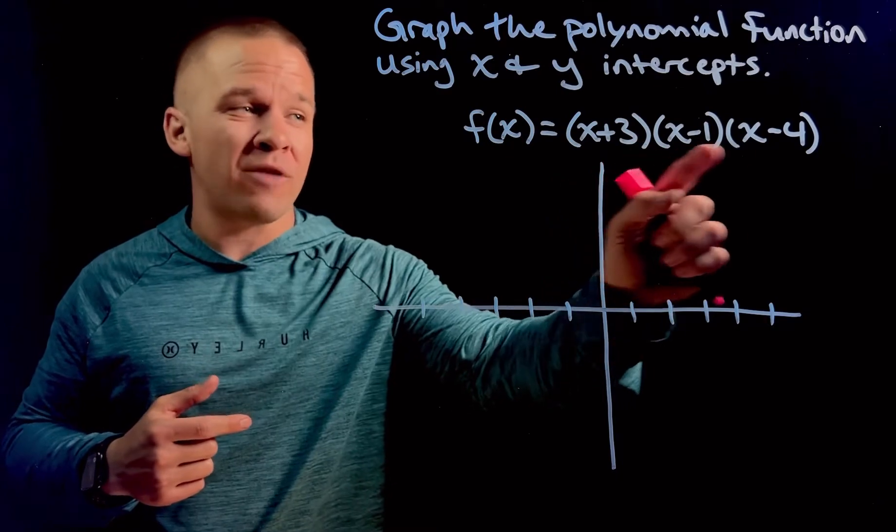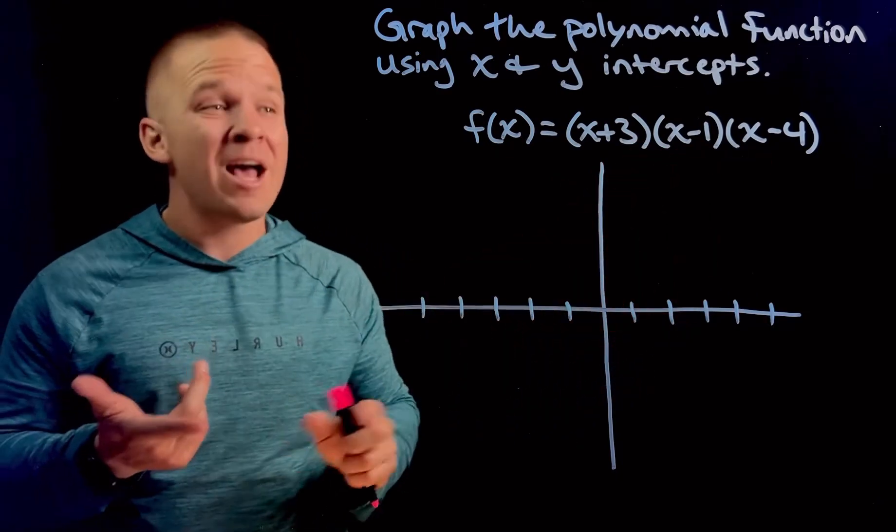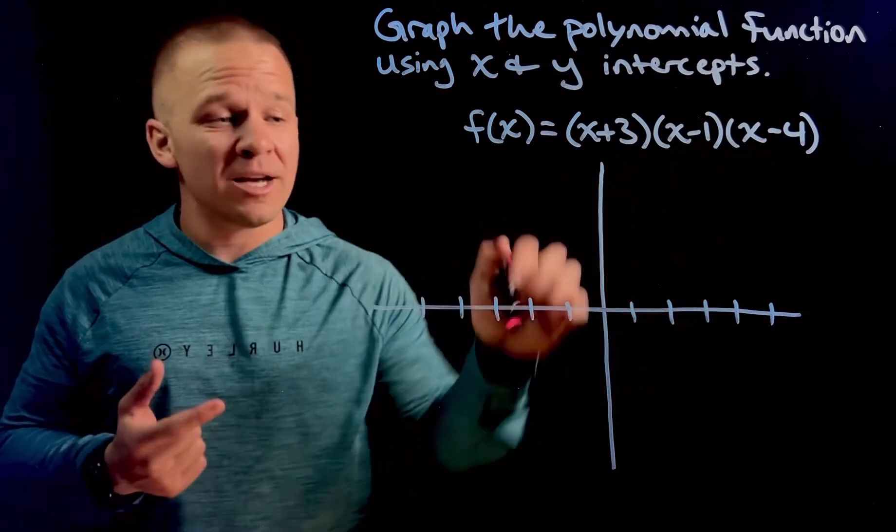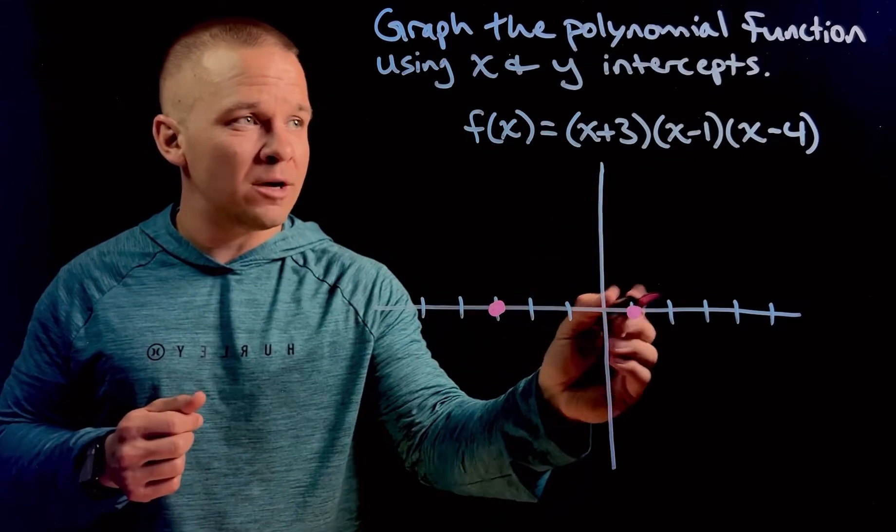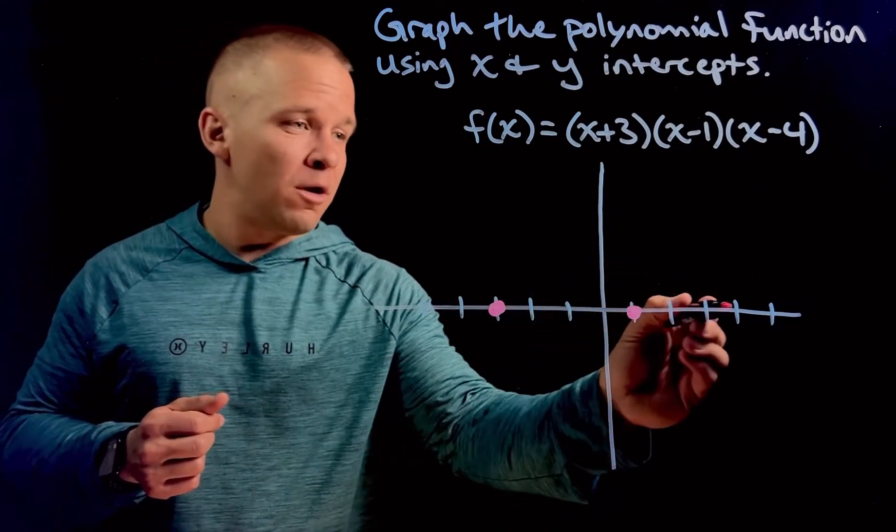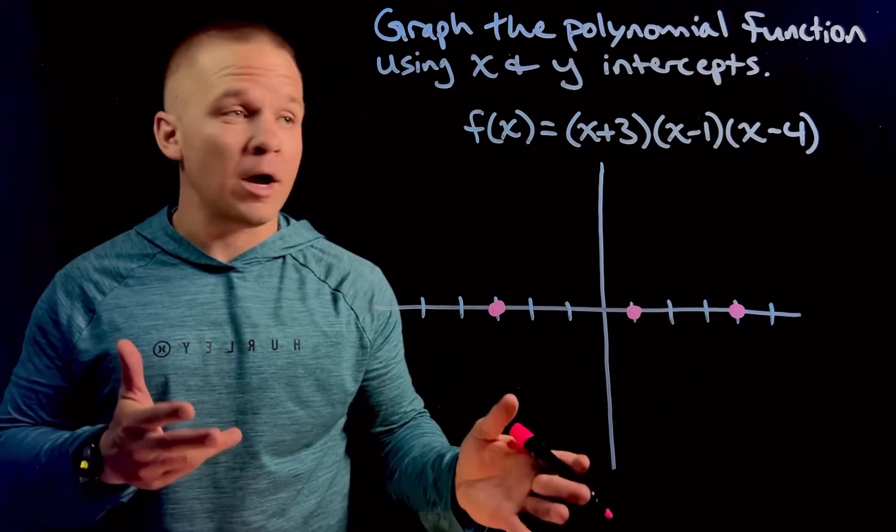Well, each one of these factors here could be set equal to zero and get me my x-intercepts. So I'd get negative three for that one, I'd get positive one for this one, and I'd get positive four for that one. Well, okay. That's pretty dope.